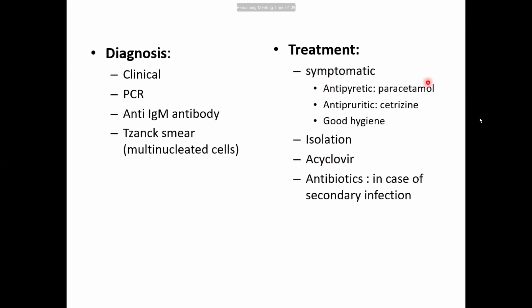Treatment of chickenpox is generally symptomatic. For smaller babies, antivirals are not routinely given; for older children we prefer to give acyclovir, which is the antiviral specific for herpes viruses. Symptomatic treatment includes paracetamol for fever, antihistamines such as cetirizine or fexofenadine for itching, and maintaining good hygiene with proper bathing to prevent secondary skin infection and scarring. The child must be isolated during the infectious period — until five days after the last crust formation.